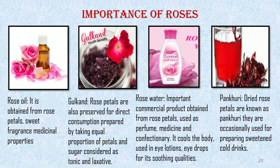Importance of roses: Rose oil is obtained from rose petals, having sweet fragrance and medicinal properties. Gulkand — rose petals are preserved for direct consumption, prepared by taking equal proportions of petals and sugar; it is considered a tonic and laxative. Rose water is an important commercial product obtained from rose petals, used as perfume, medicine, and in confectionery; it cools the body and is used in eye lotions and eye drops for its soothing quality. Pankhuri — dried rose petals known as pankhuri are occasionally used in drinks. This is all about cultivation of roses; hope you will understand the concept.